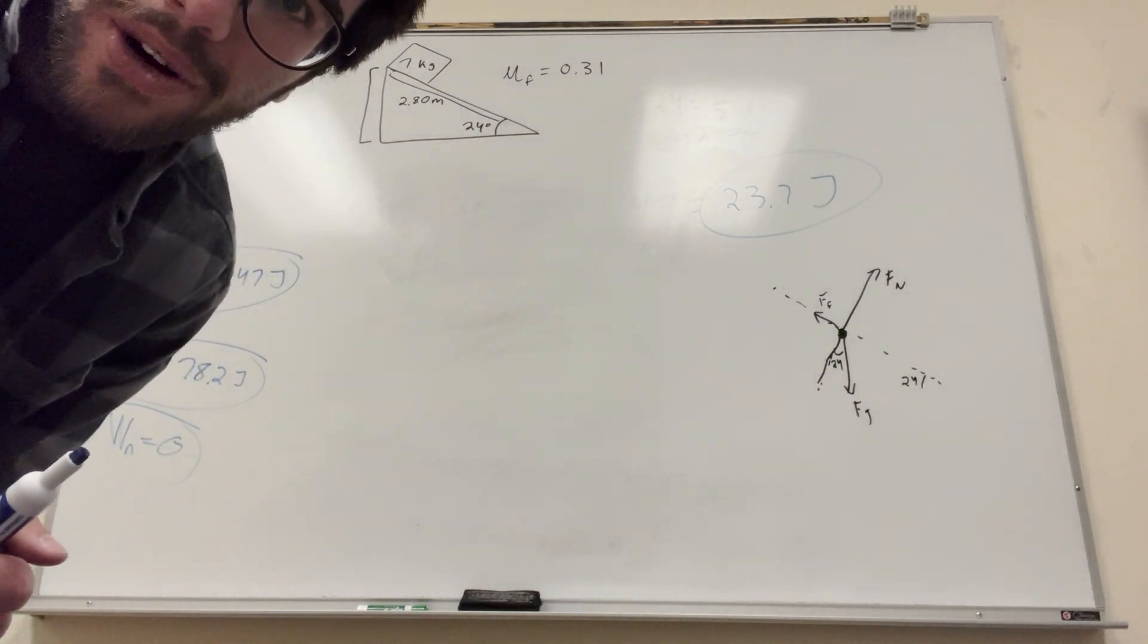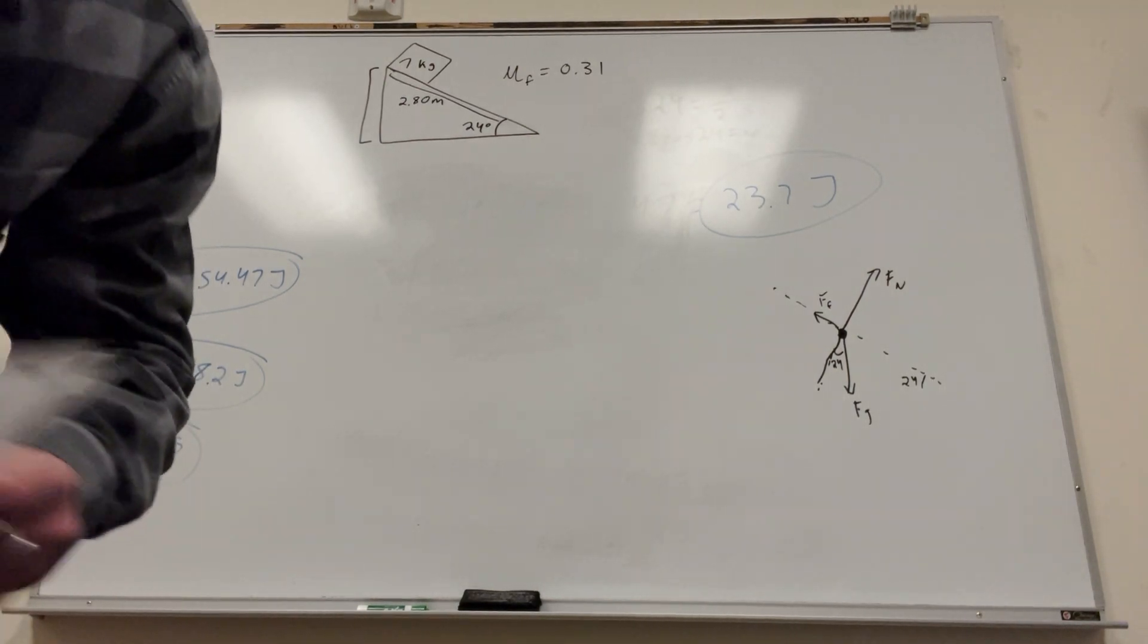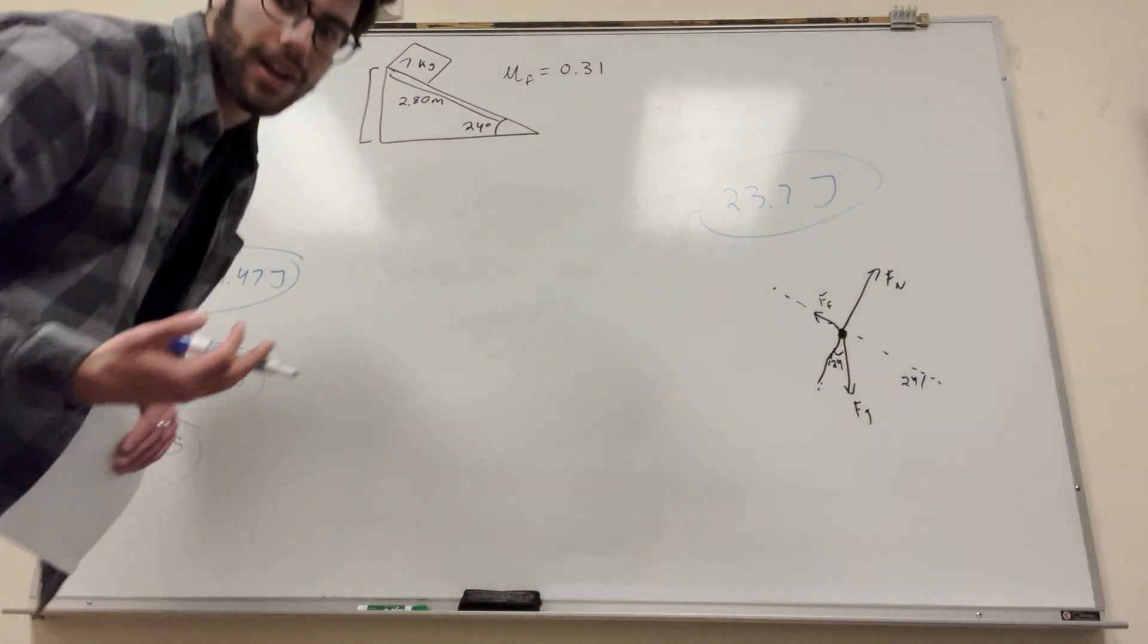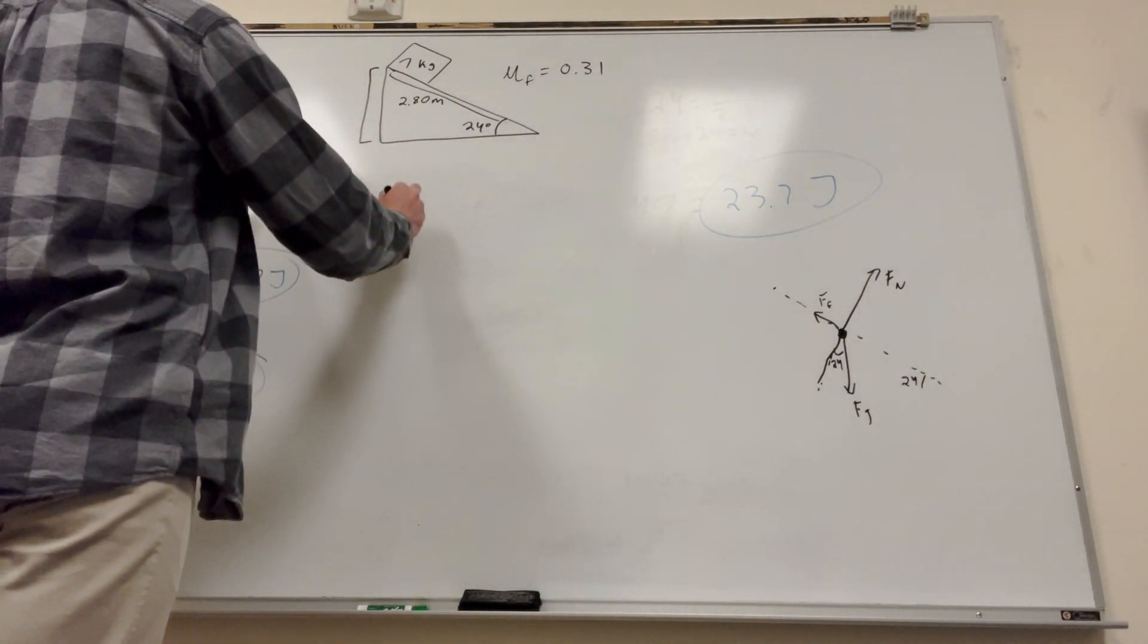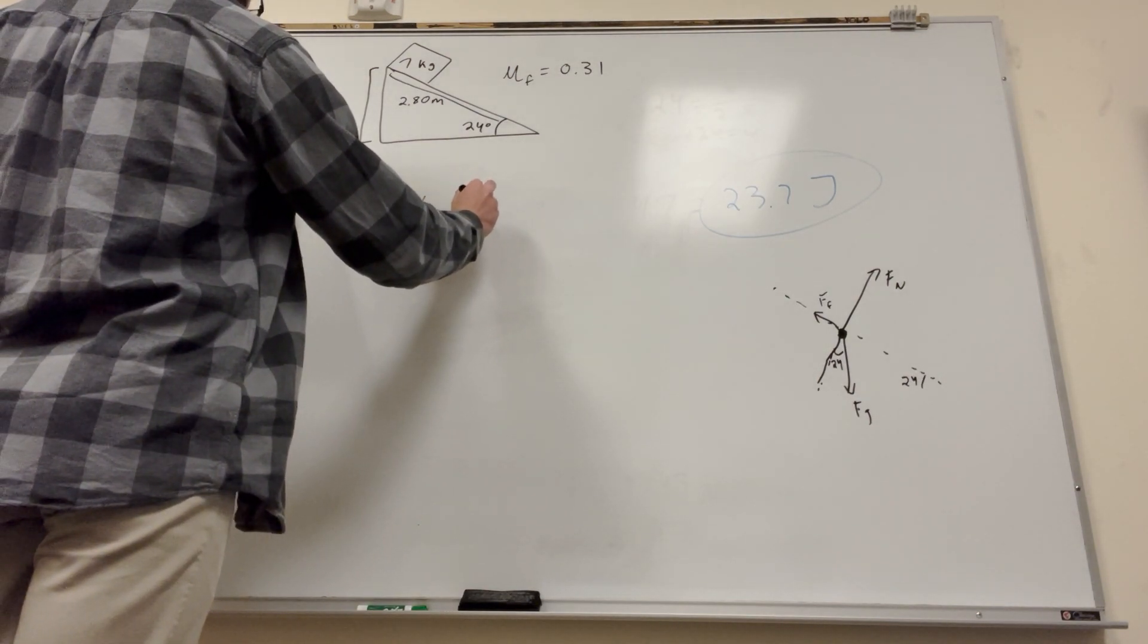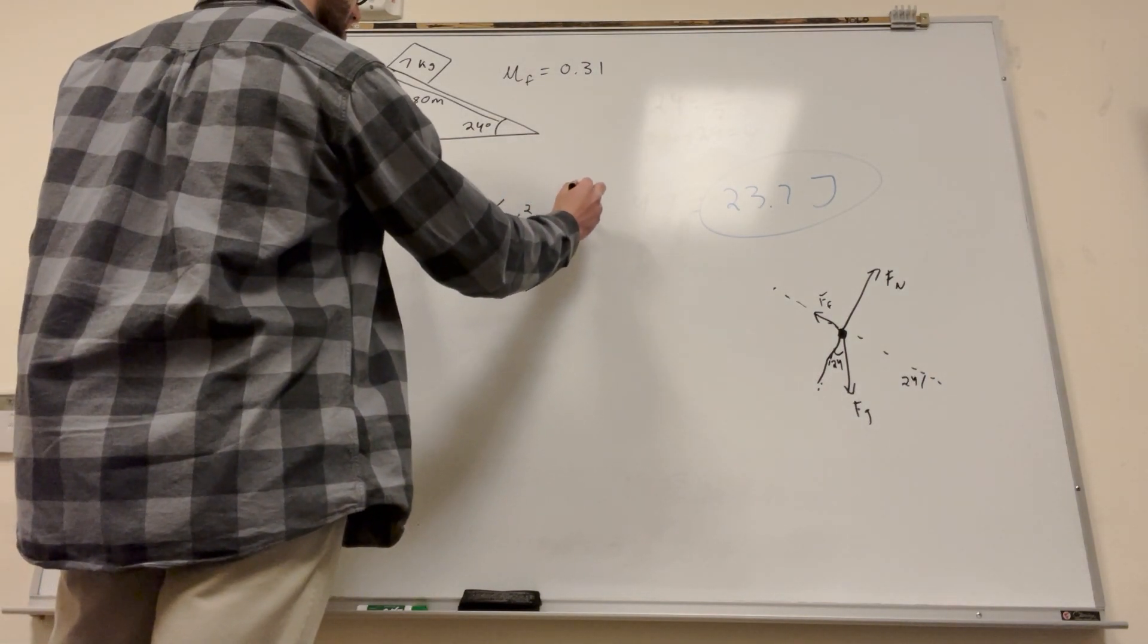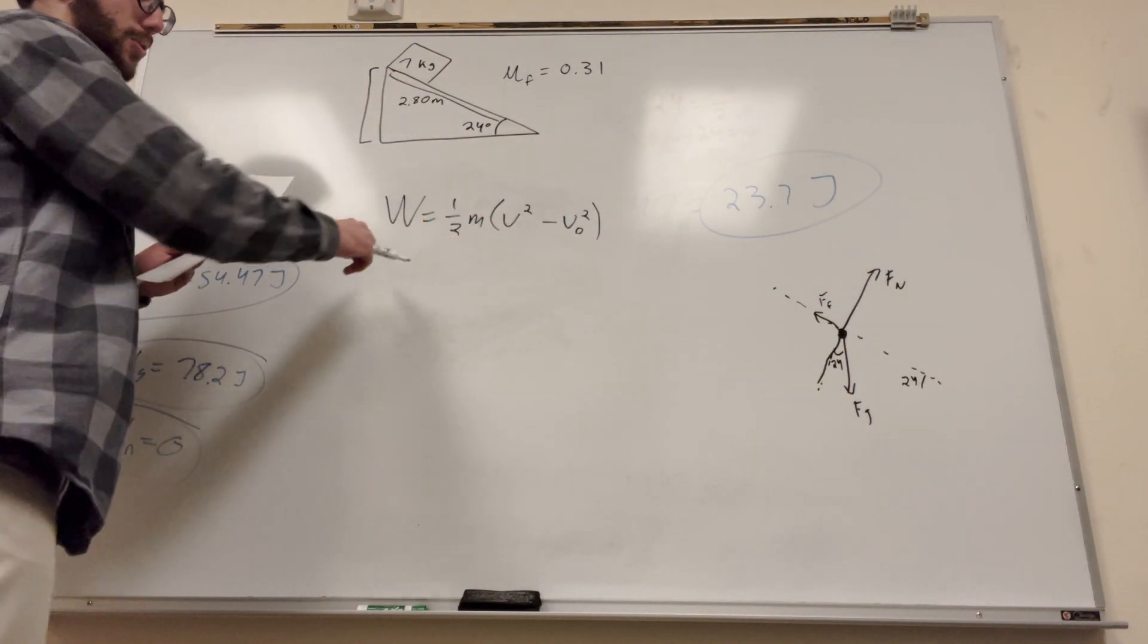Final one. Package has a speed of 2.2 meters per second at the top of the ramp. What will the speed be when it's gone down 2.8 meters down the ramp? So, when it's at the bottom of the ramp. Okay, for this one, we're going to need to use a formula. And basically, this is just a formula that you guys should memorize because it's very useful. Work is equal to one-half mass times velocity final squared minus velocity initial squared.